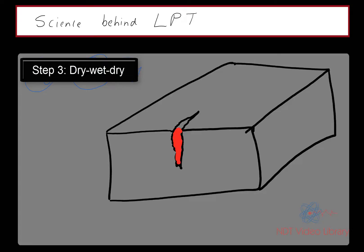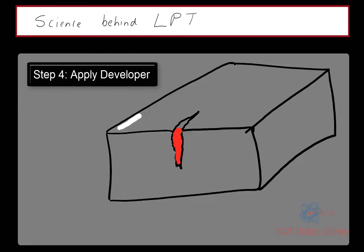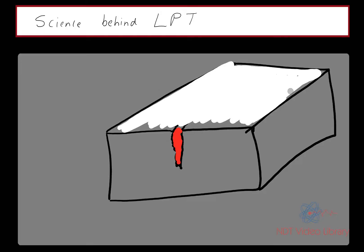Your third step is to make sure all the top surface is dry before you spray the developer. Once that's done, spray the developer, making sure you cover the entire top surface evenly. Don't spray too much developer, otherwise it's going to mask the discontinuities.